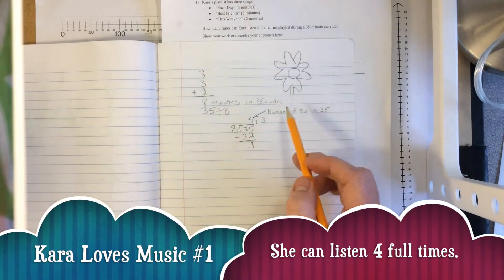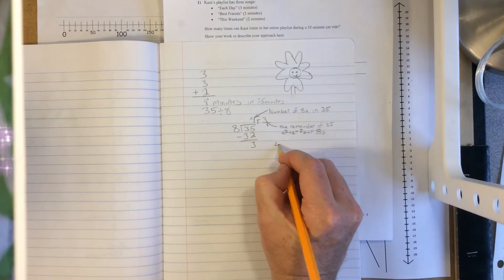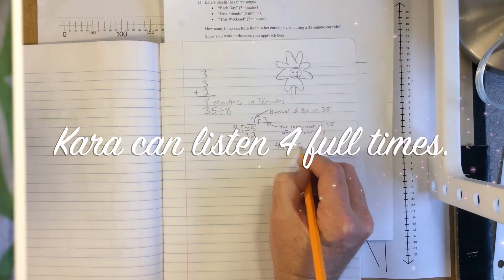So the number of 8's in 35 is 4, and there's 3 left over after 4 8's. That means there's 4 full times.